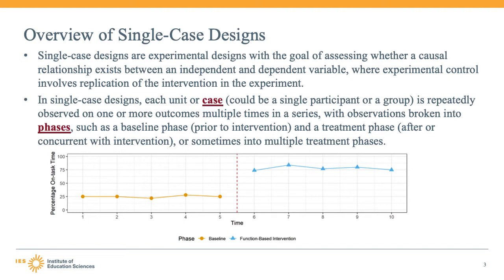The simplest version of the design is an example of an AB design. The baseline phase corresponds to the A phase, and the intervention phase is the B phase. This design has weak internal validity, because events other than the intervention, such as those related to maturation or history, could be the true cause of the intervention effect.